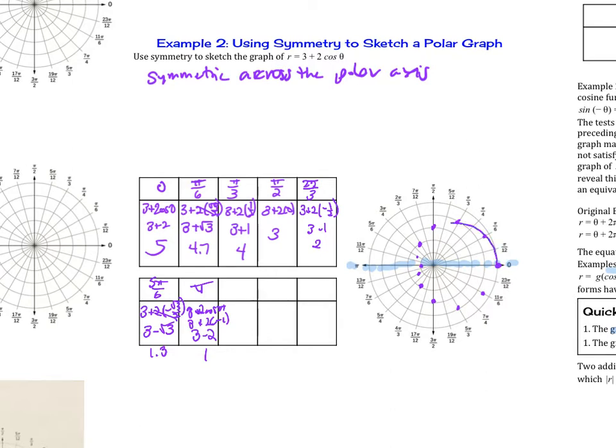So then if I were to draw the curve, notice there's a little dimple here. This is the graph of 3 plus 2 cosine of theta. And so what this is called, it's called a limaçon. Very neat word.